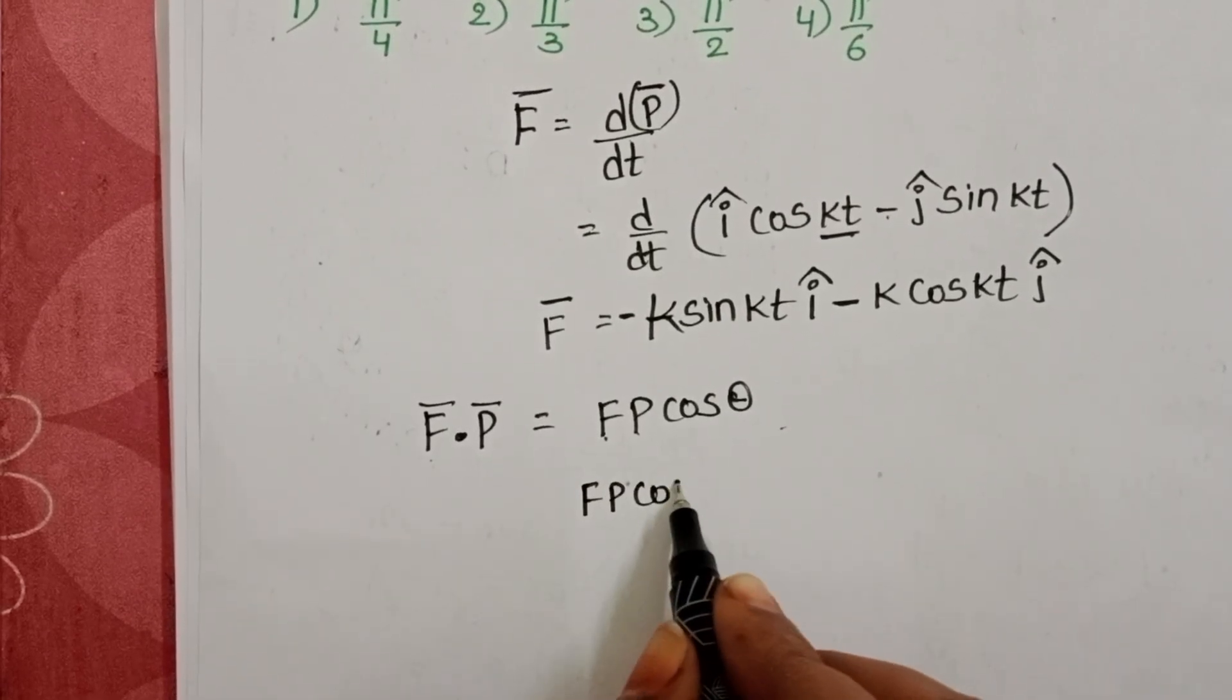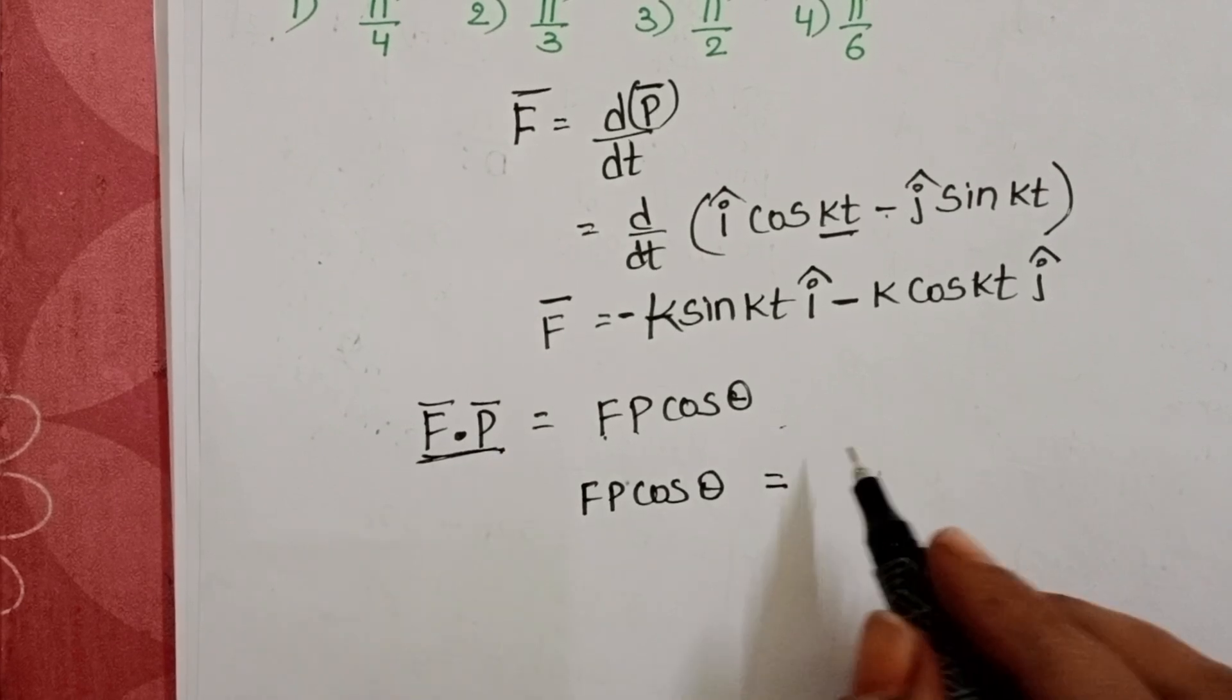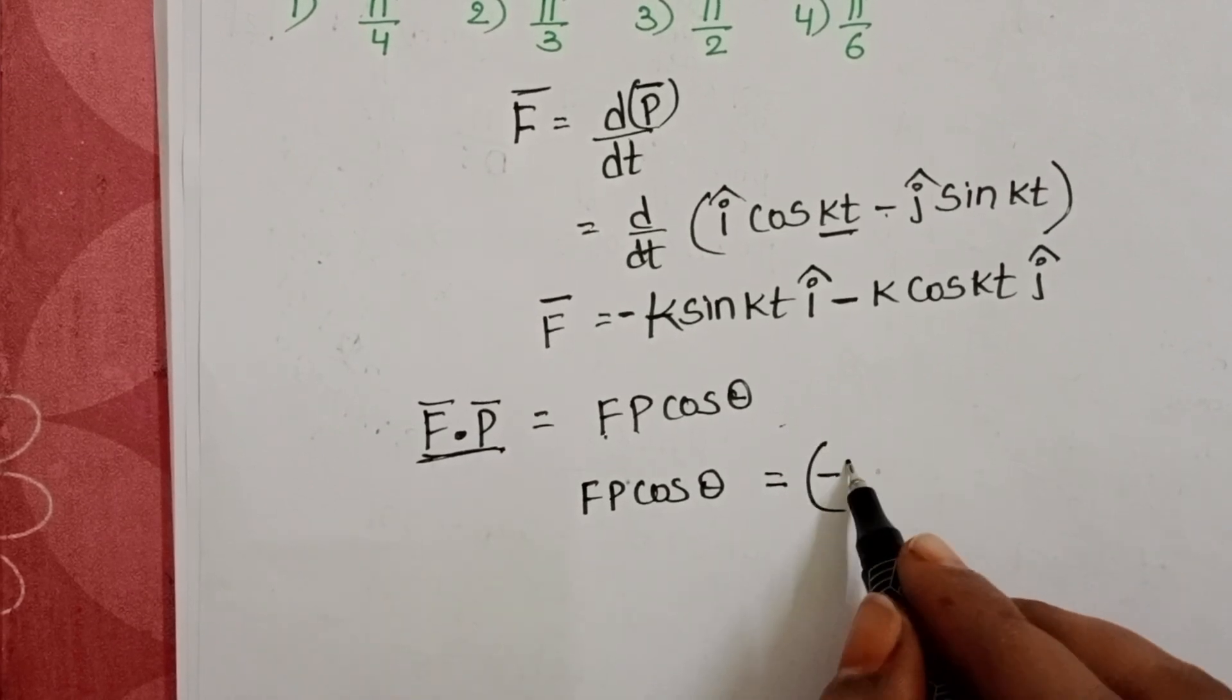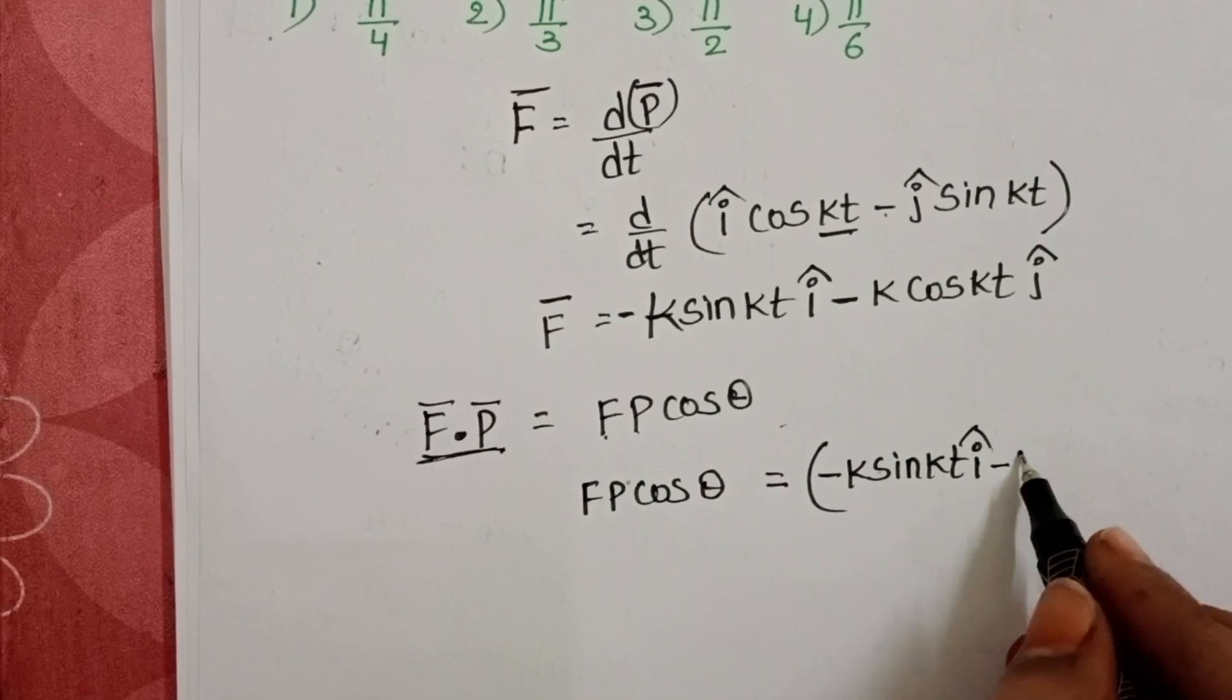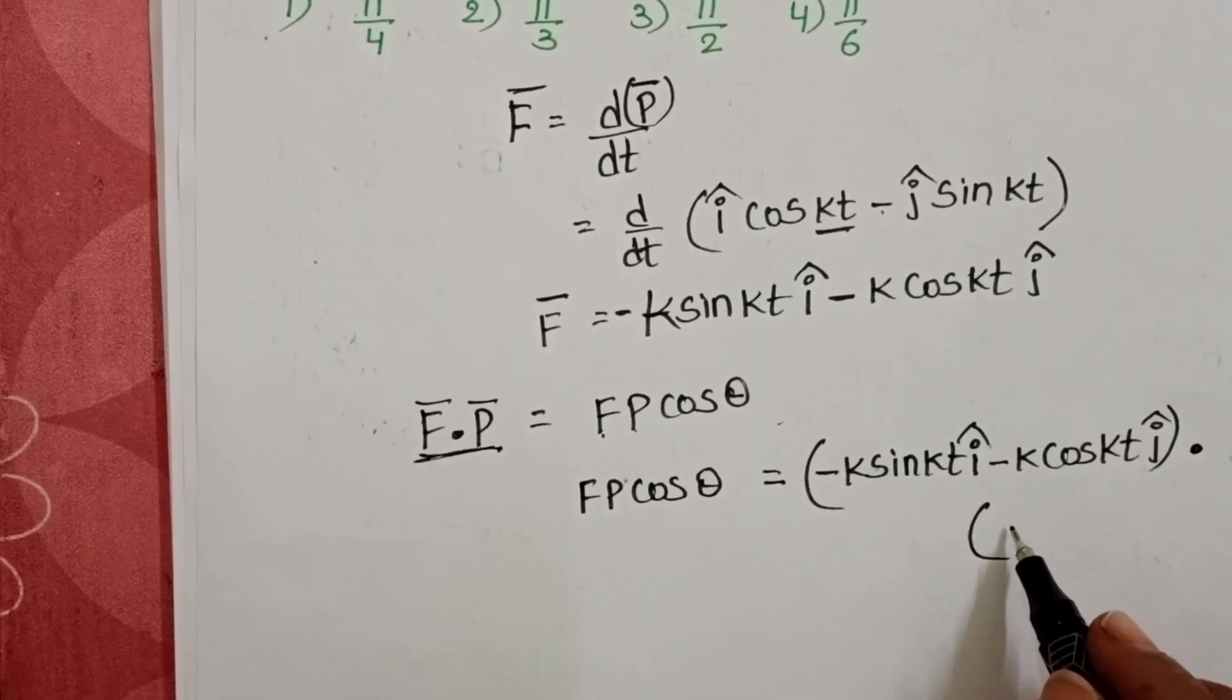FP cos theta equals, do the dot product of these two vectors, force vector dot momentum vector.